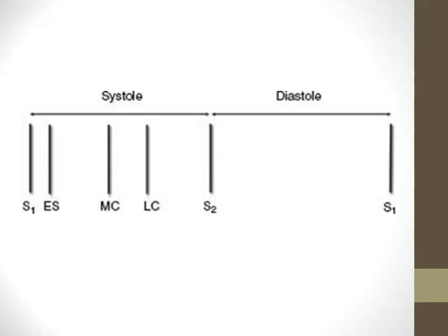Systolic sounds: Ejection sound (ES) — heard early in systole, typically with a bicuspid aortic or pulmonic valve. Non-ejection sounds include mid-systolic click (MC) and late-systolic click (LC), both associated with mitral valve prolapse and tensing of the chordae. The click is followed by a murmur representing the mitral regurgitation that occurs after valve prolapse.